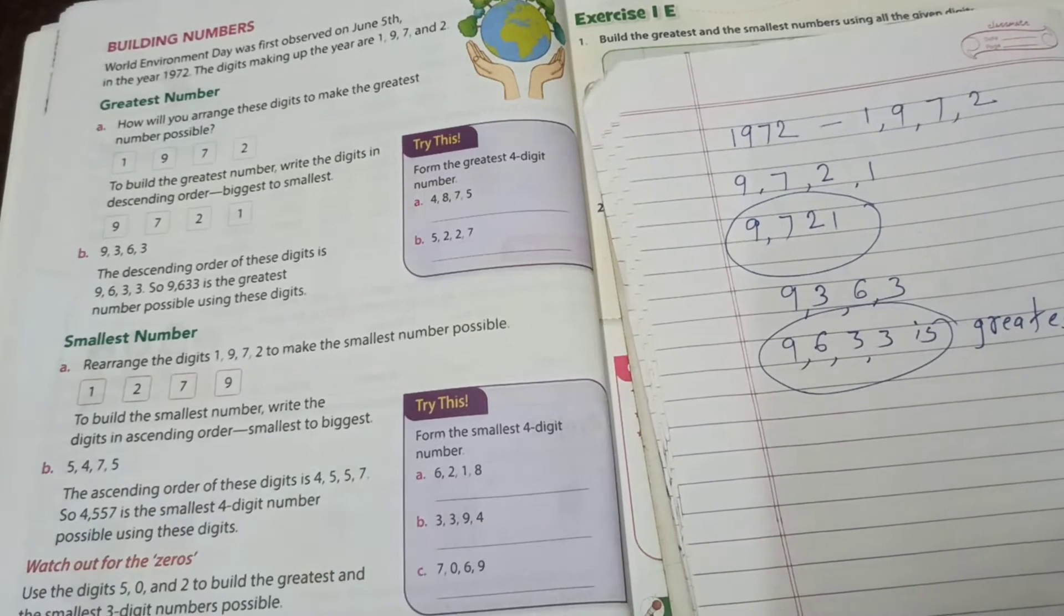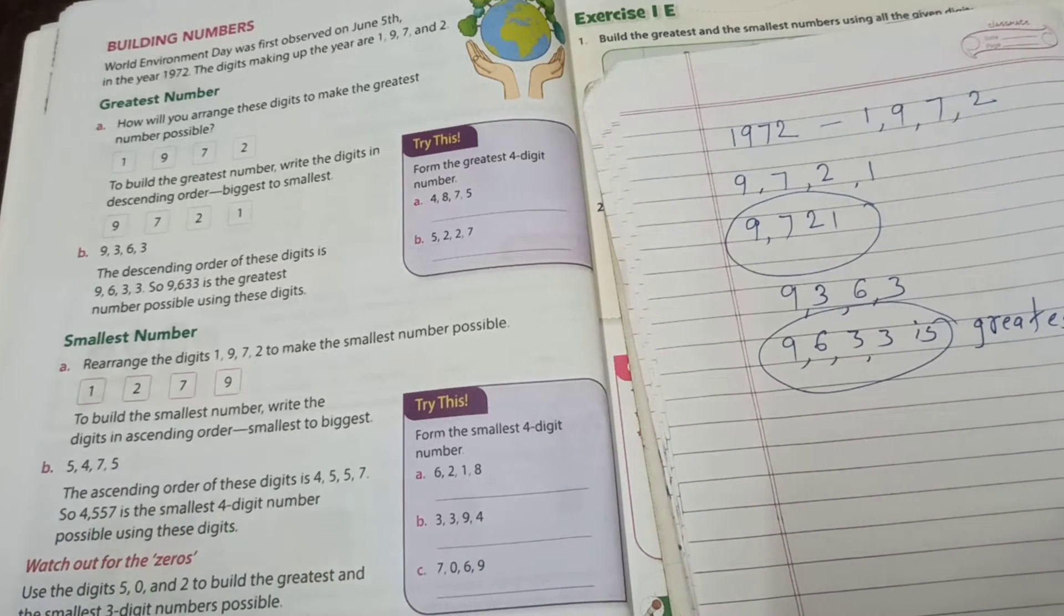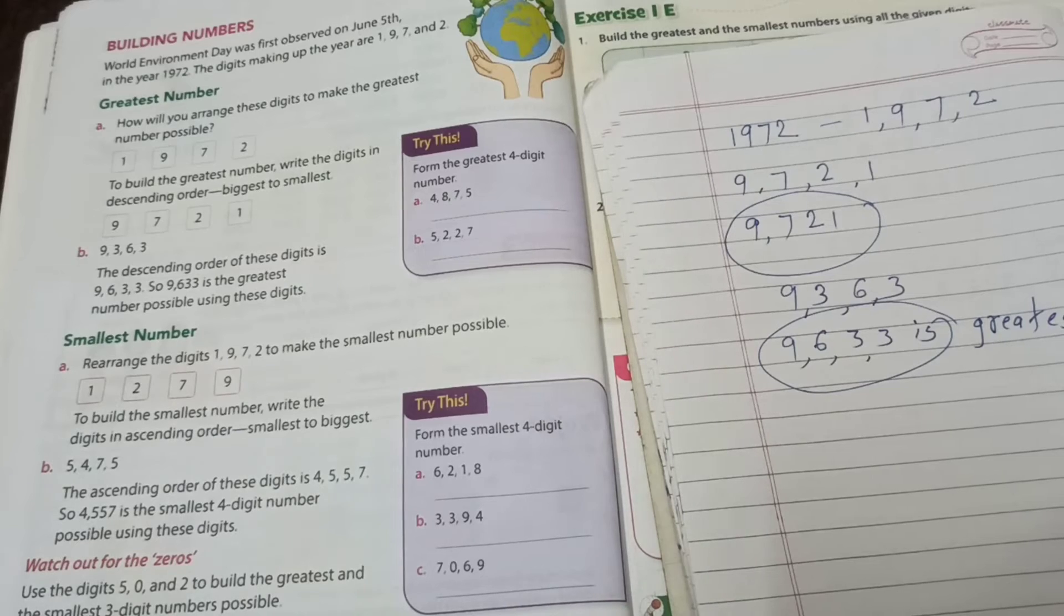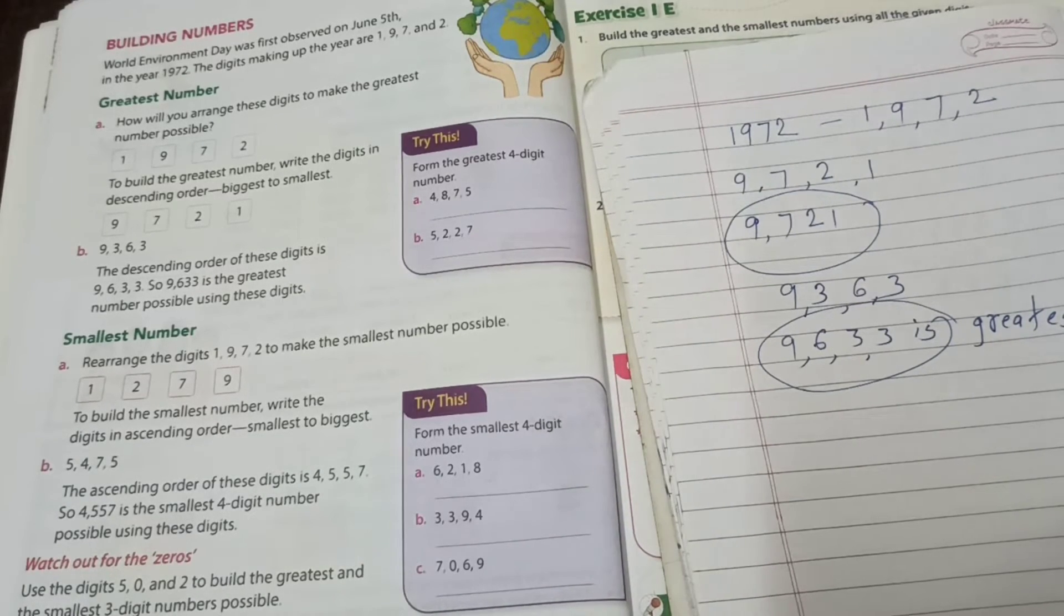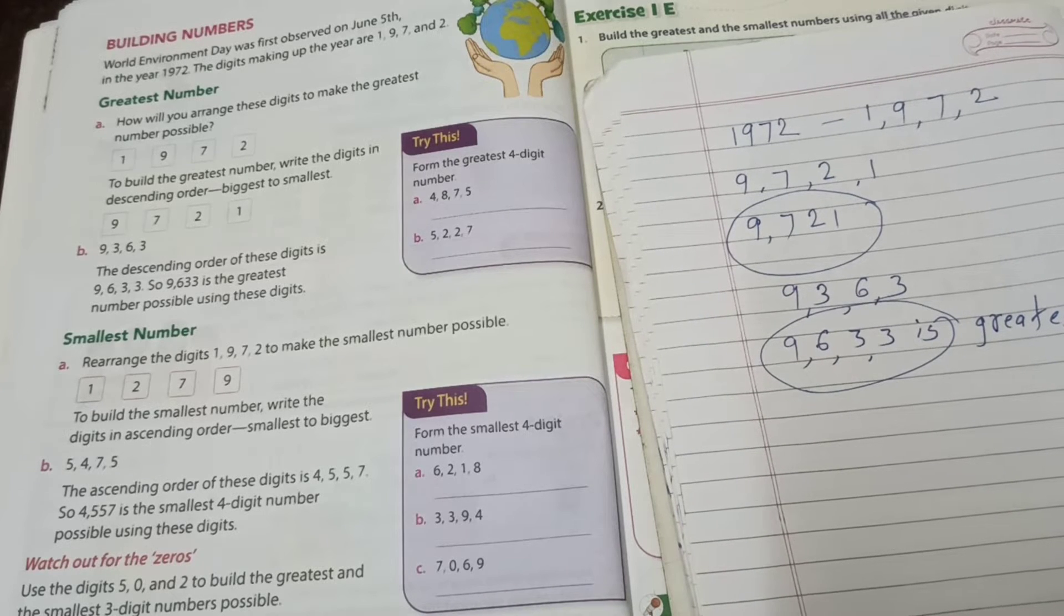Means it is possible using any 4 number, 3 number, we make a greatest number and smallest number also. Then let us come. Now we learn smallest number. How to make?